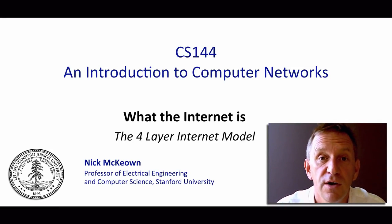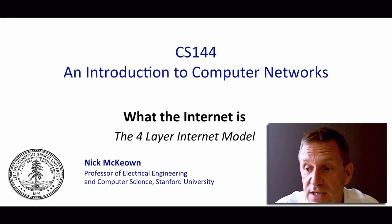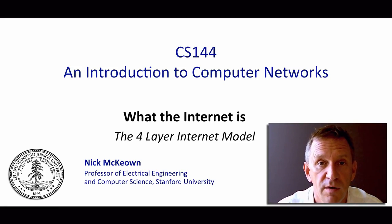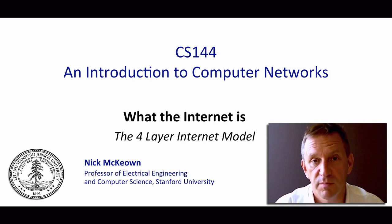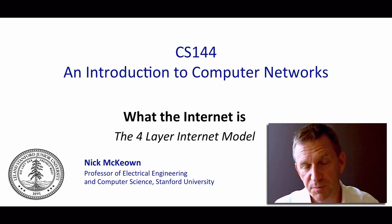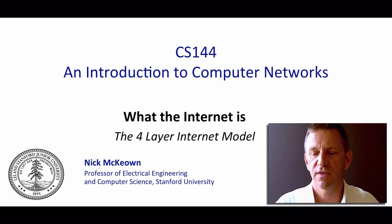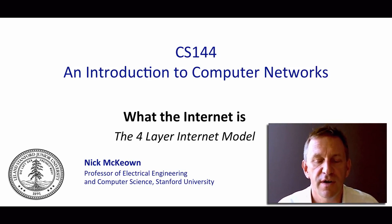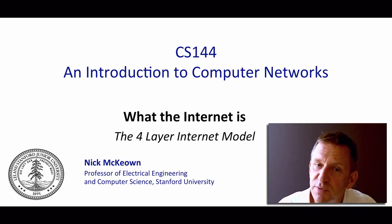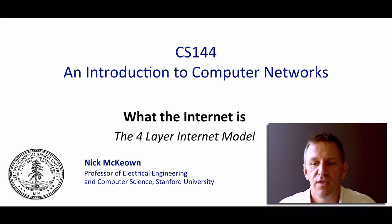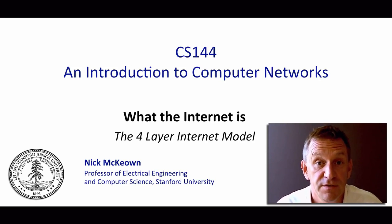In the last video, you learned how a variety of different applications, such as BitTorrent, Skype, and the web, all communicate over the Internet using a very similar model — basically a bi-directional, reliable byte stream. It takes a lot of different pieces working together to create this reliable communication model for our applications. But even though we use a huge variety of different Internet applications, sending many kinds of data at very different speeds, there are surprisingly strong similarities in the way applications send and receive data.